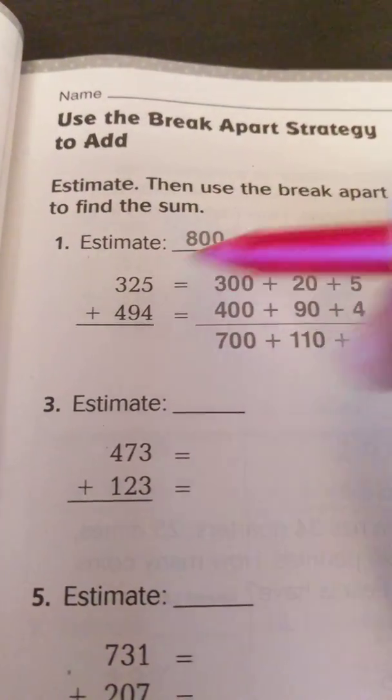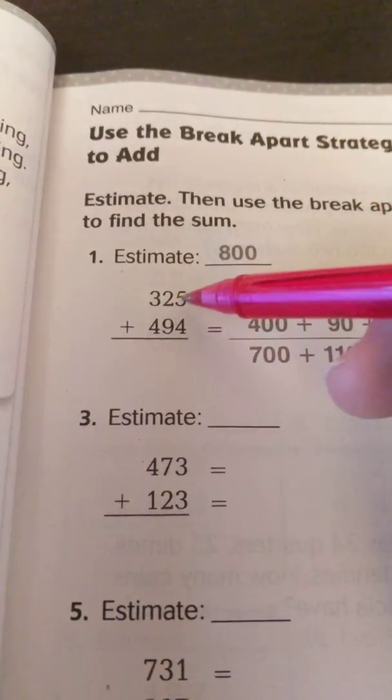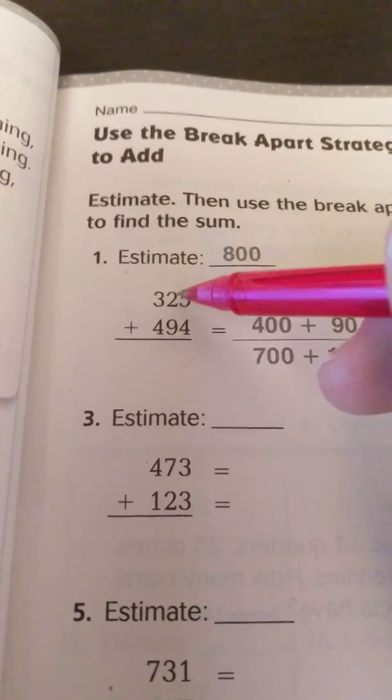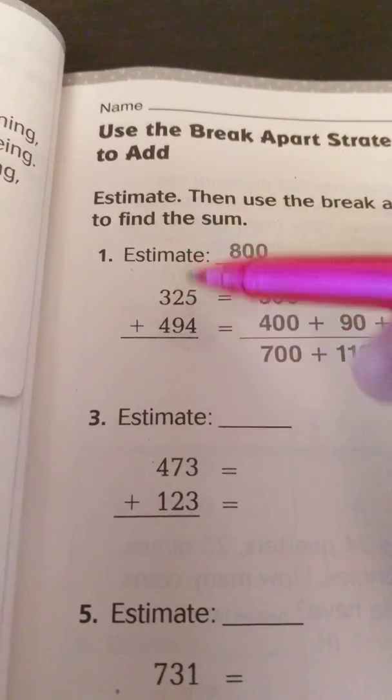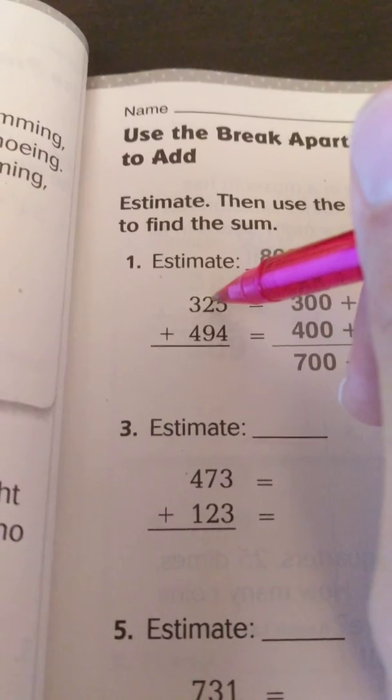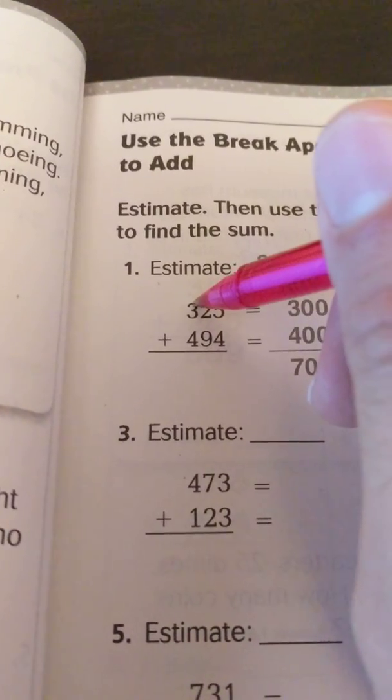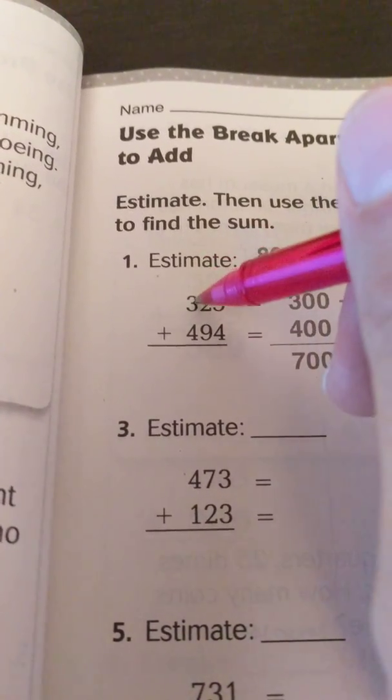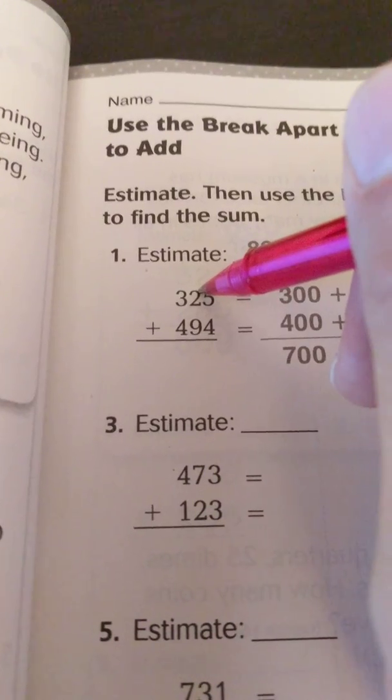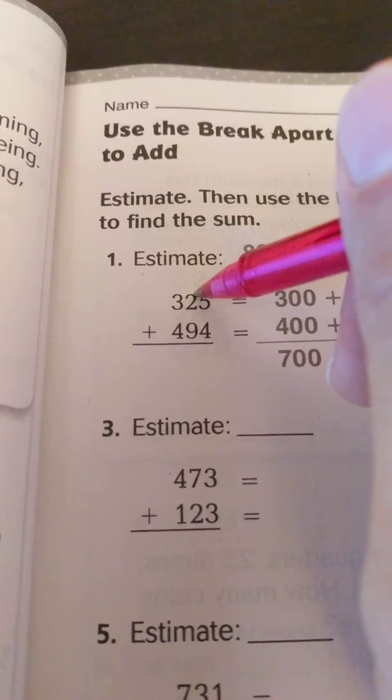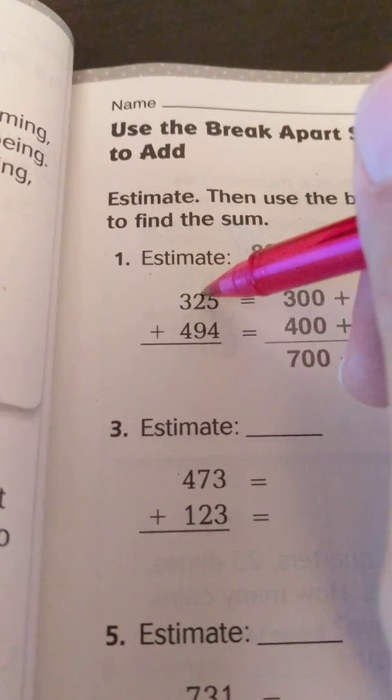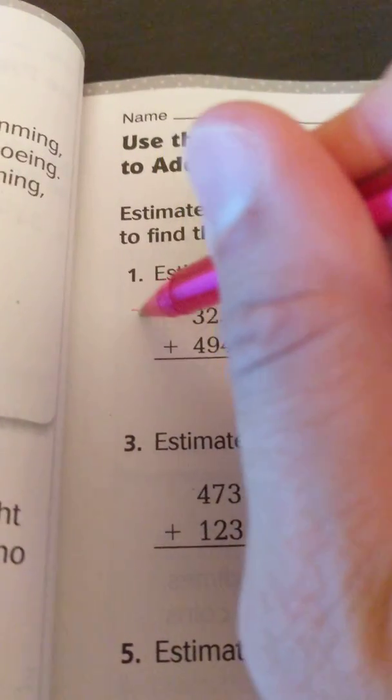So let's go ahead on to estimating. We're looking to round to the nearest hundred. So if I'm looking at my middle number, my tens, to estimate for the hundreds, I know 2 is less than 5. So if it's less than 5, the 3 stays the same when we round.